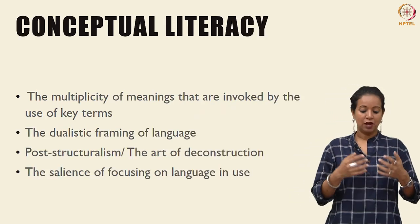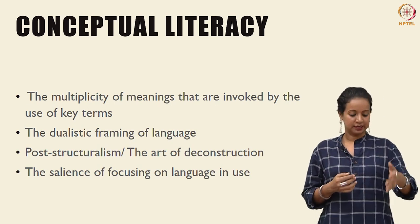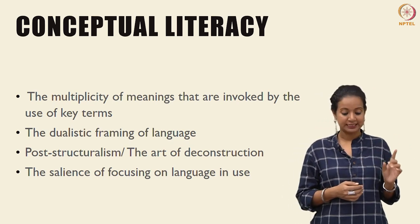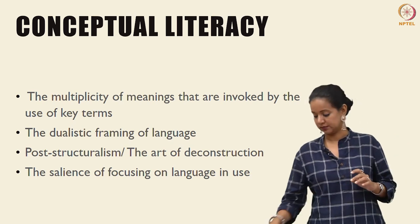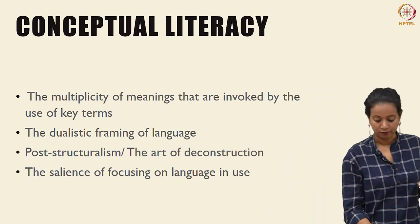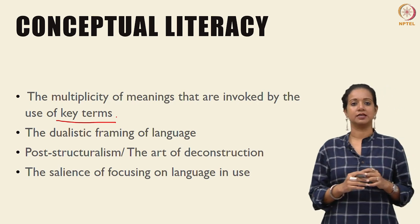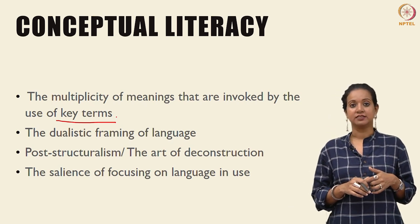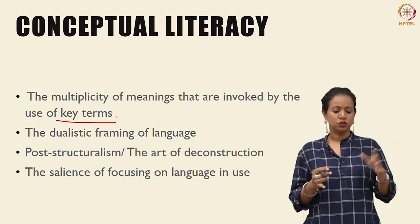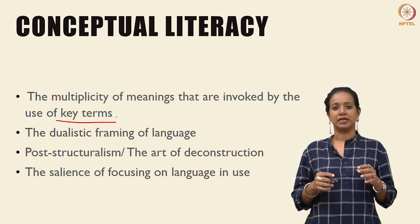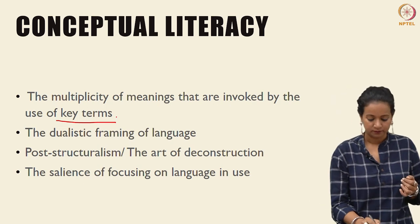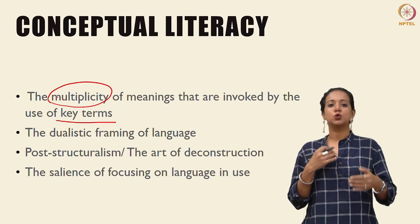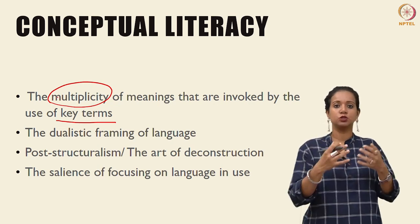Conceptual literacy for our purposes consists of the following. We are very interested in the multiplicity of meanings that are invoked by the use of key terms. We have already been through some key terms last week — sex, gender, sisterhood, violence, marriage, structures, and so on. Now we are going to take it to a different level and say that all of these key terms can mean multiple things, and therefore in building a theory, how do we ever agree upon what somebody means when they say 'woman'?